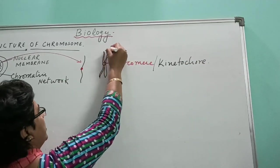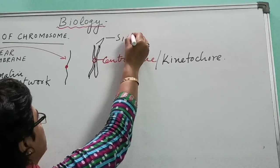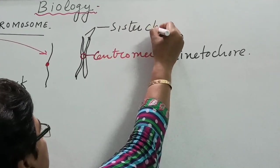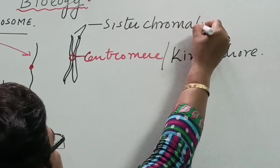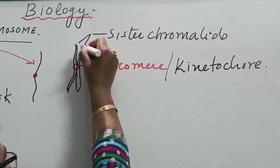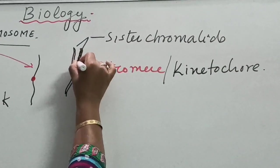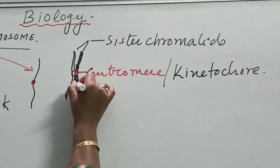These chromatids, sister chromatids, are densely coiled, made up of thread-like structure.